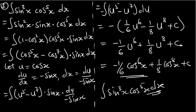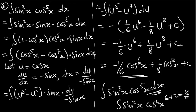So this is how you approach integrals of the form sin^m(x)·cos^n(x) when m+n is odd. What if the sum of powers is even? For example, integral of sin²x·cos⁶x — where 2+6=8, which is even. Watch out for that in part three. Thank you for watching this episode.